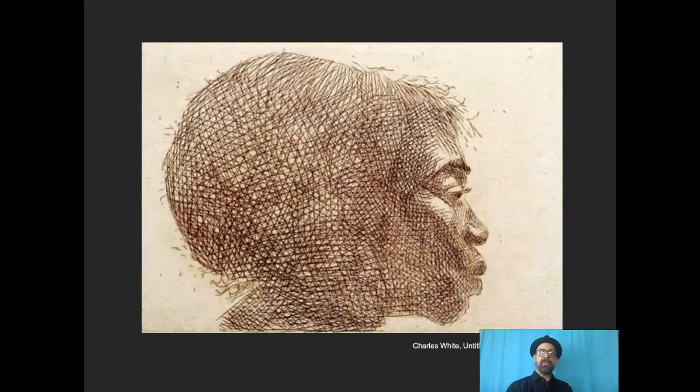Here's a beautiful etching by Charles White using a network of hatched lines to suggest volume and value. More about that later. And here's a vector engraving. These are all made with a computer, like vector lines that describe the volume of this figure. Pretty cool. Cross contour.